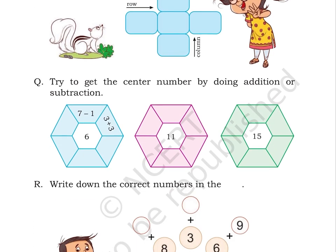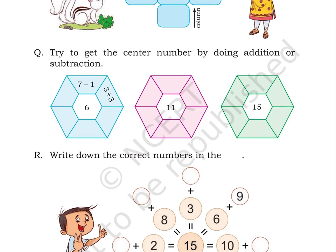Puzzle Q: Try to get the center number by doing addition or subtraction. Here on page number 127, there are 3 pictures of a hexagon. Each picture is divided into 6 parts. In the first picture, in the two parts of the picture, 7 minus 1, 3 plus 3 is written. And in the center of the image, number 6 is written.